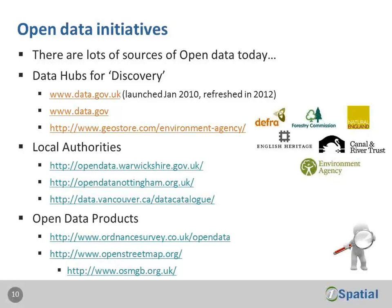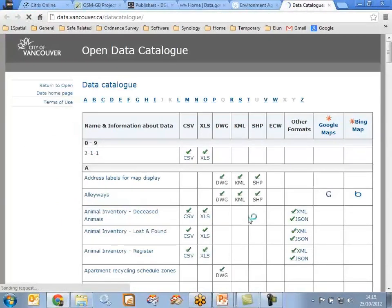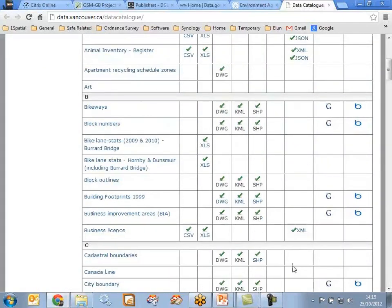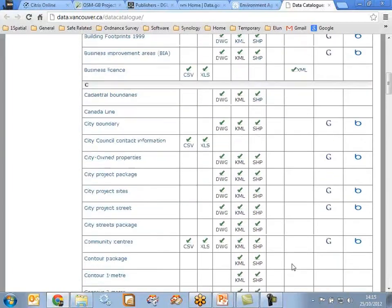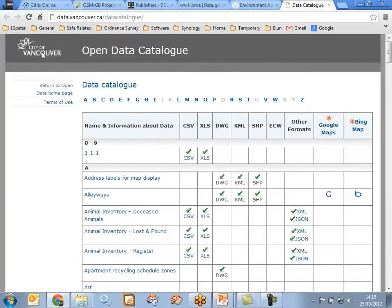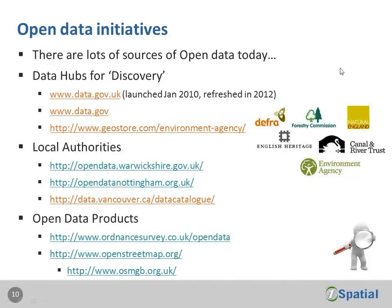Local authorities are starting to put data out and make it available - Warwickshire and Nottingham are both doing a sterling job. Both organizations use FME behind the scenes to process their data and make it available through their portals. The city of Vancouver has a data catalogue that goes further, allowing creation of datasets in different formats served into web browsers using Google Maps and Bing Maps. The city of Vancouver also has a mapping interface utilizing the FME Server product.